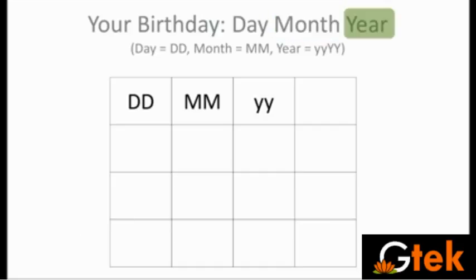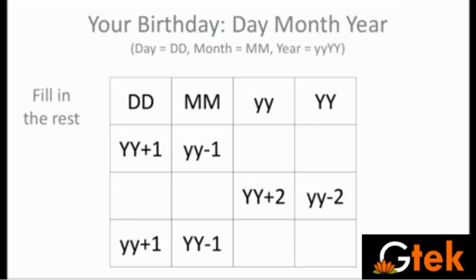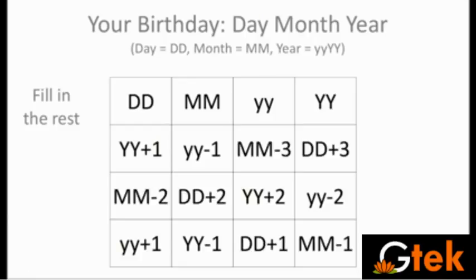You can also do this with your own date of birth. You use your day, your month, and your year. Place your year twice in the first row. In the second column, use year plus 1; in the second row, year minus 1. In other positions: month minus 3, day plus 3, month minus 2, day plus 2, year plus 2, year minus 2, year plus 1, year minus 1, day plus 1, month minus 1. Done this way, your birthday will also generate a magic square, just like Ramanujan's idea.